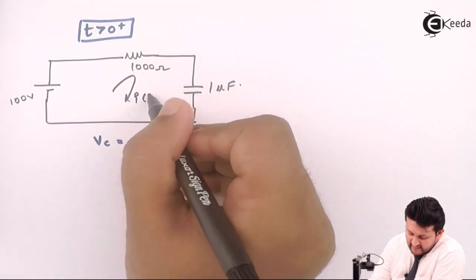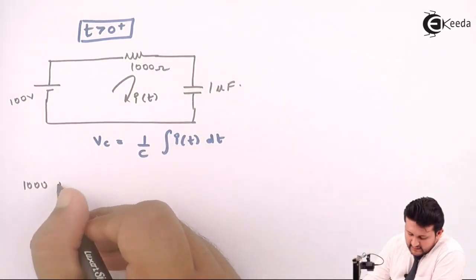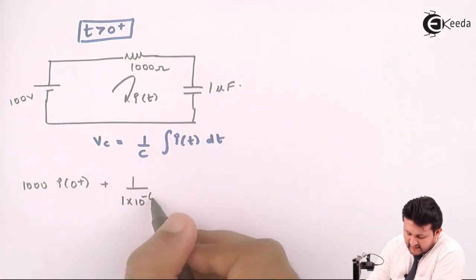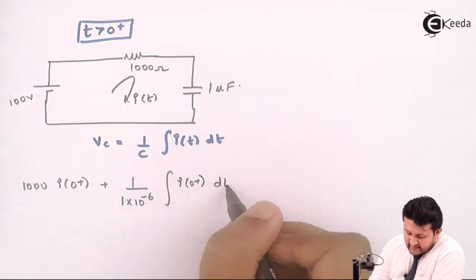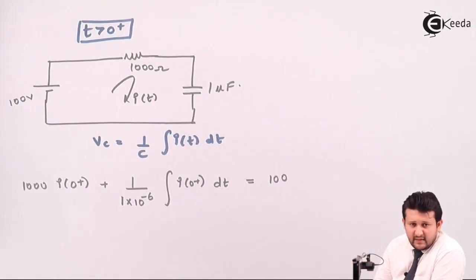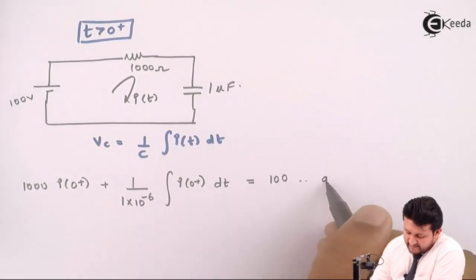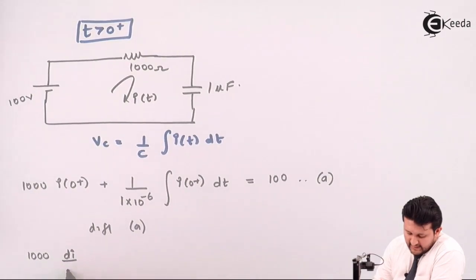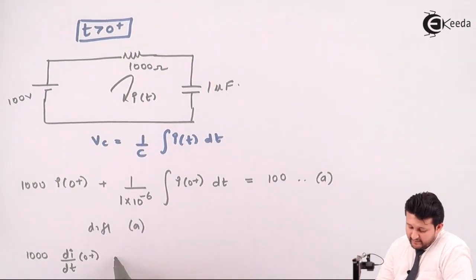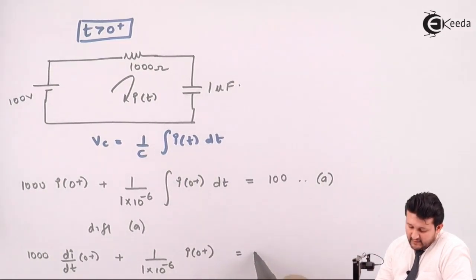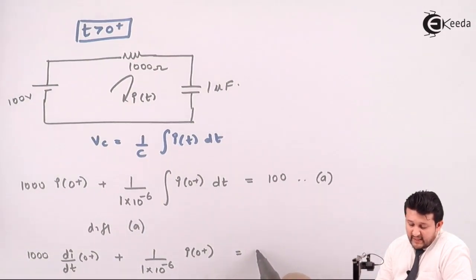Applying KVL to this circuit gives equation A: 1000×I(0+) + (1/(10⁻⁶)) × ∫I(0+)dt = 100. We already found I(0) and I(0+). Now we need to find di/dt. To do so, differentiate equation A. After differentiating, the integration and differentiation cancel each other. Since 100 is a constant, its derivative is 0.